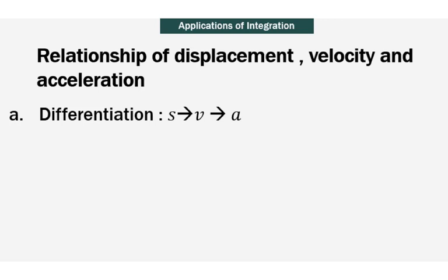In the last section about differentiation, we have learnt that when a particle moves in a straight line where the displacement from a fixed point O on the line is S, we can obtain the velocity and also the acceleration by differentiation. For instance, when you have the equation of S, to get the velocity equation, all you need to do is differentiate the equation of S with respect to time. You will get velocity.